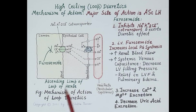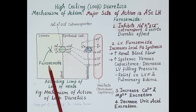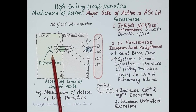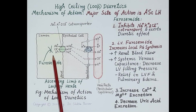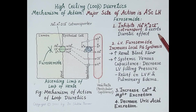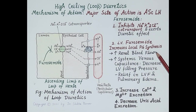Around 25 percent of sodium is reabsorbed in the thick ascending limb of the loop of Henle. Furosemide inhibits sodium-potassium-2-chloride co-transport, resulting in a net loss of sodium and water in the urine, increasing urine volume and exerting its diuretic effect. Intravenous furosemide also increases local prostaglandin synthesis.